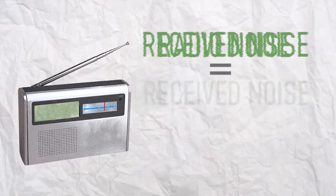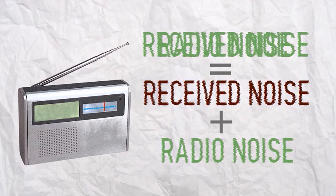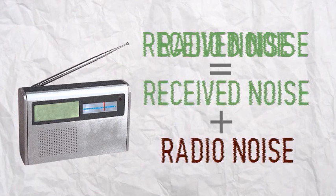However, this noise has two types: the noise that is received by the antenna, and the noise created by the radio itself.